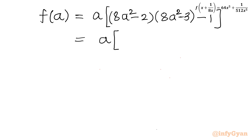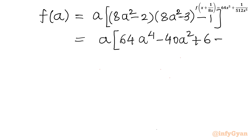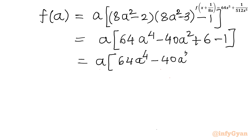Expanding: a·(8a²)·(8a²) = 64a⁴·a, giving 64a⁵. Then collecting terms: −24a − 16a gives −40a³, and −3a + 6a − 1 contributes the lower terms. Simplifying completely: f(a) = a(64a⁴ − 40a² + 5). So f(a) = 64a⁵ − 40a³ + 5a.